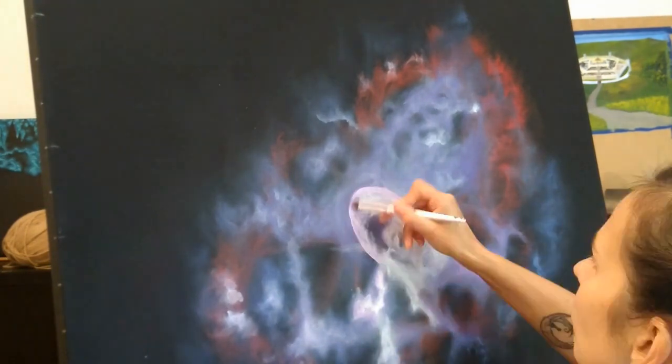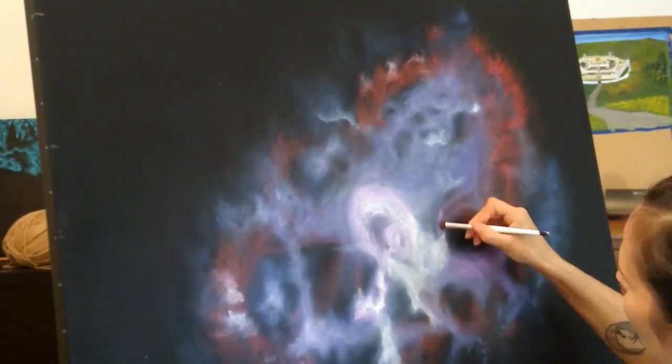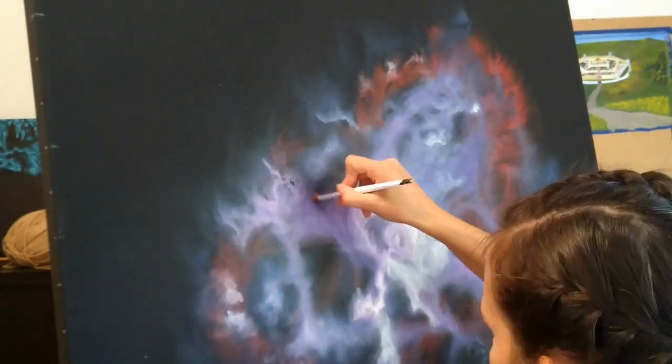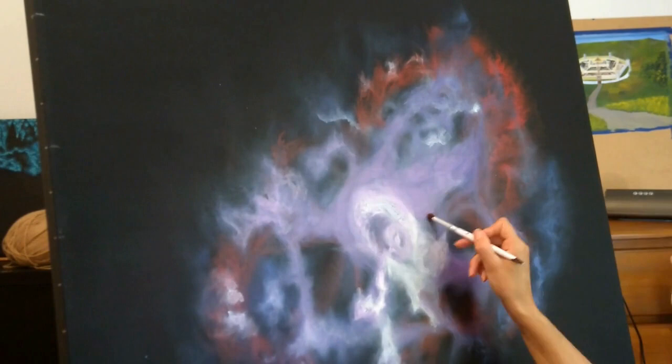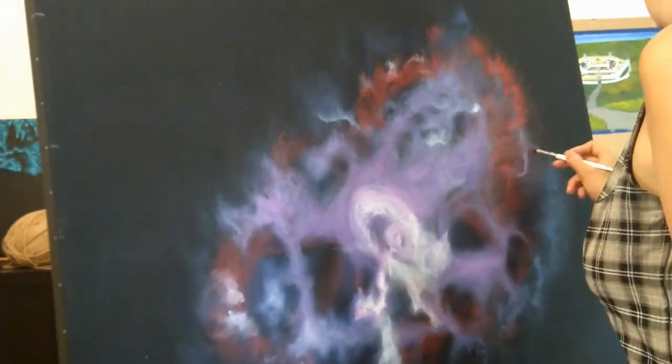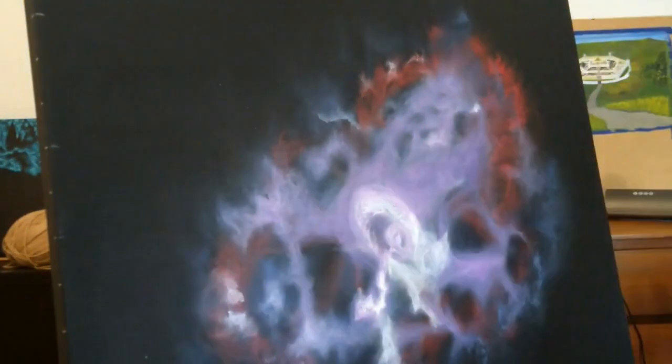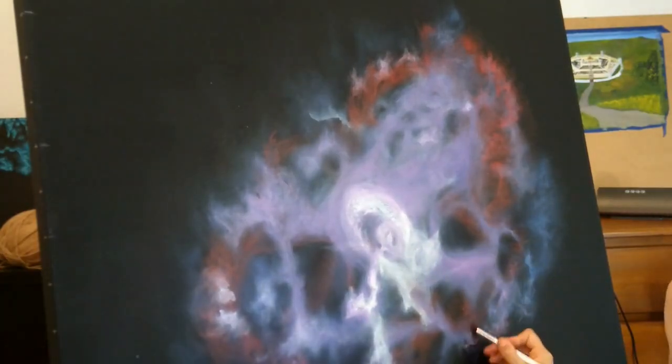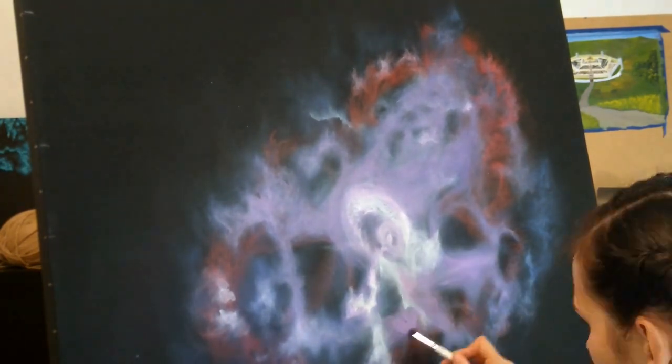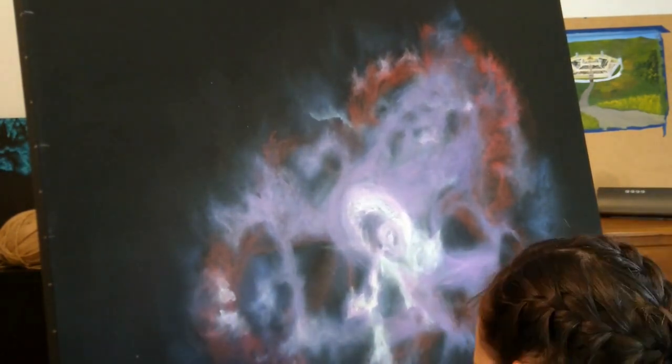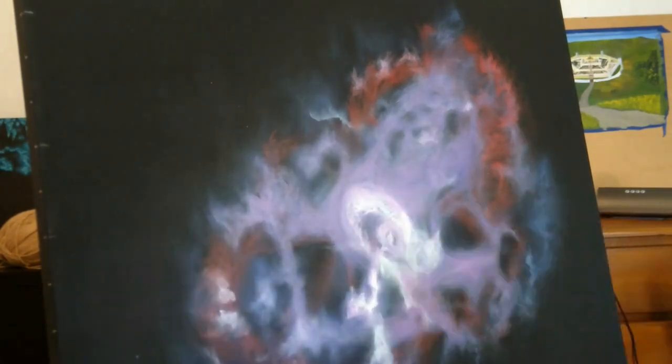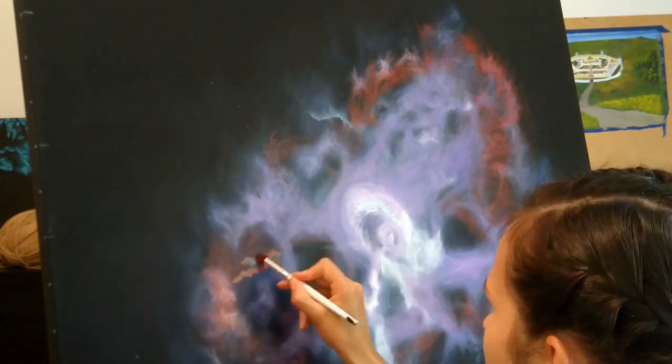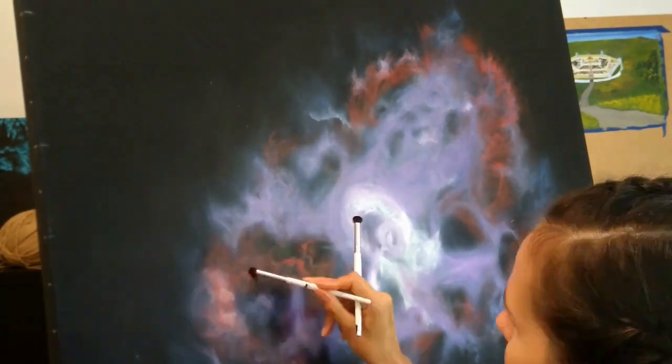As you can see, the color doesn't really pick it up very well. I just went over it again with a different purple. So it's just layer over layer over layer. The beautiful thing about acrylic paint is that you can just paint over it straight away. You don't have to wait weeks as you do with oil paints.